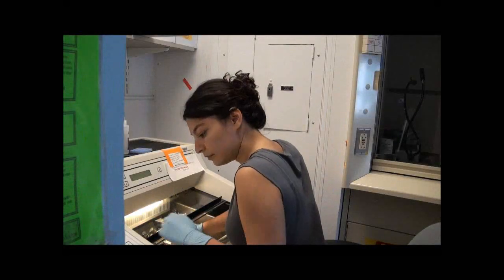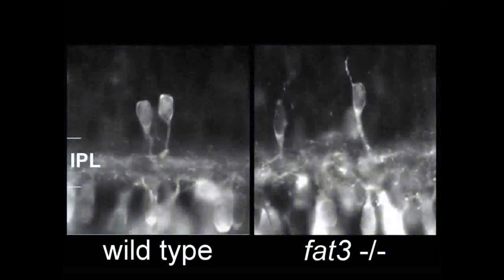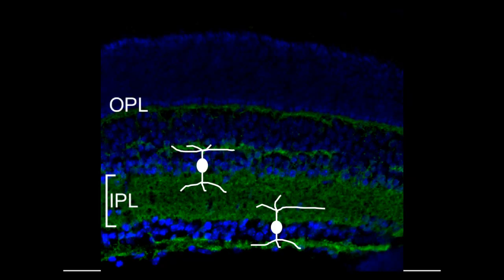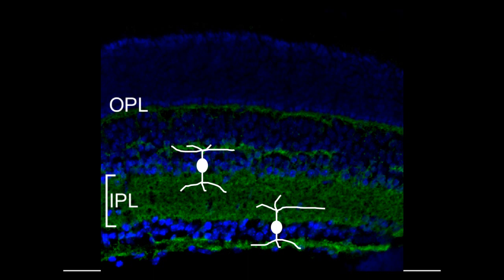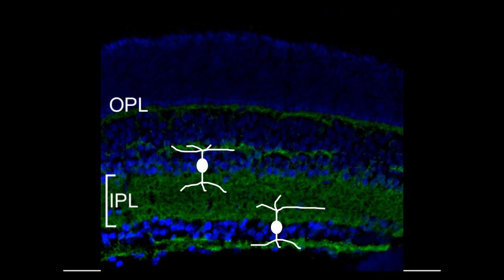One of the most striking findings was the morphology of amacrine cells in retinas from Fat3 mutant mice. As we've seen, amacrine cells generally assume a unipolar morphology. However, in the Fat3 mutant retina, amacrine cells frequently extend an extra neurite that points away from the inner plexiform layer and towards the outer nuclear layer. When we looked at the mature retina, we saw that these neurites are actually able to go on to form new dendritic arbors — true both for amacrine cells located in the inner nuclear layer and amacrine cells that are displaced in the ganglion cell layer.